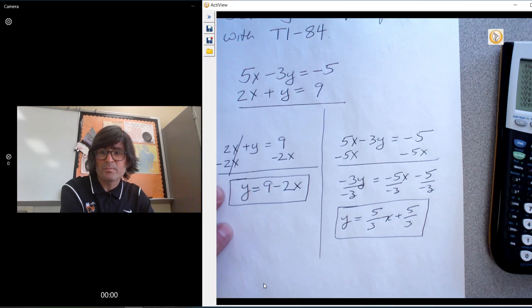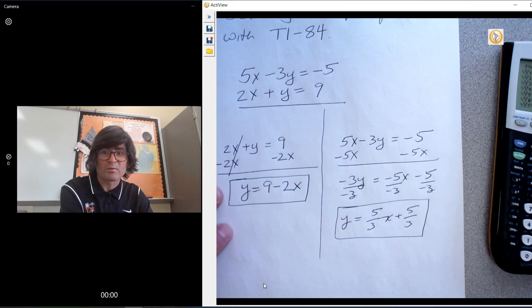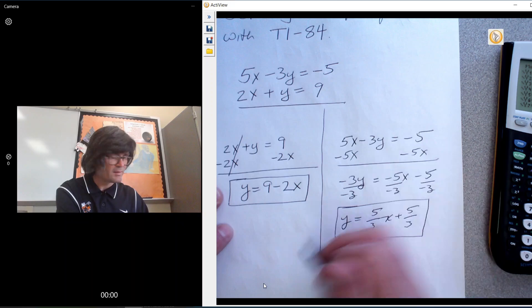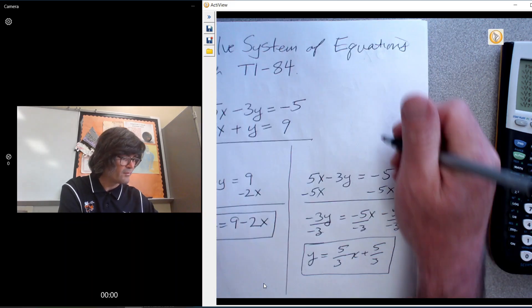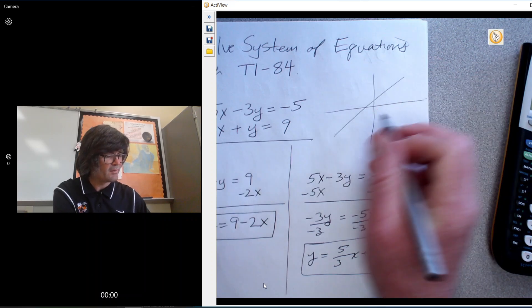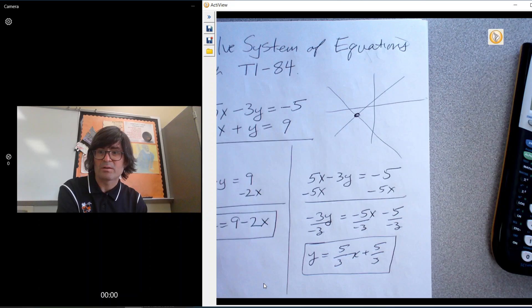What we're going to do is graph these, and the whole point of finding a solution to a system of equations is to find where the lines cross each other. I'm just going to draw some generic lines. Say you have that line and that line, that would be their solution where they cross. We're looking for where these lines cross each other.